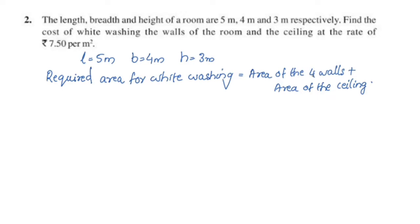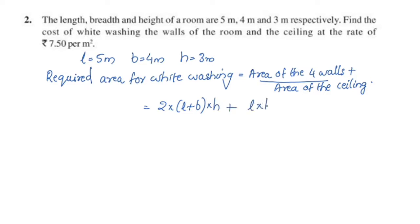The lateral surface area is the area of the four walls. That is 2 into (L plus B) into H, plus area of the ceiling, which is L into B. The ceiling is rectangle shaped, so its area is L into B.